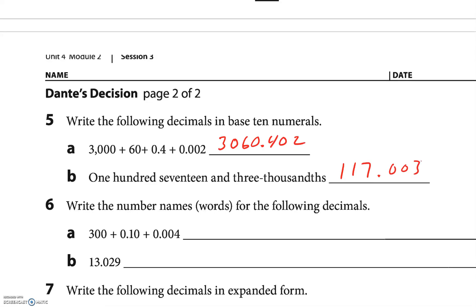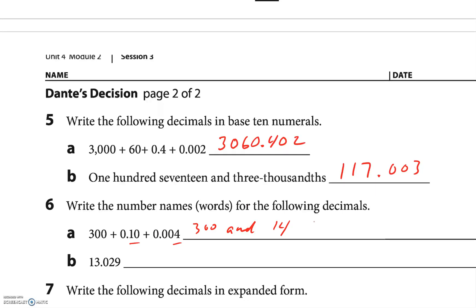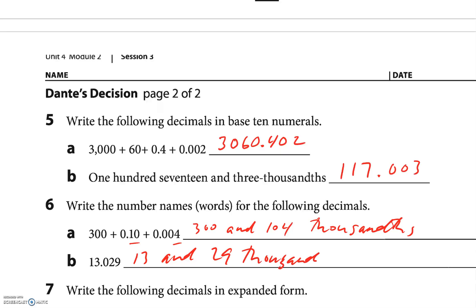Write the number names in words for the following decimals. The first one: three hundred and fourteen thousandths — I need to be careful here, it's not fourteen, there needs to be a break: one hundred four thousandths. The next one: thirteen and twenty-nine thousandths — there's no digit in the tenths place, which threw me off.